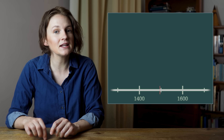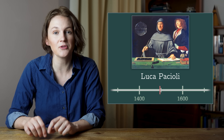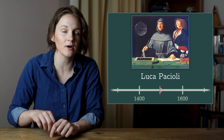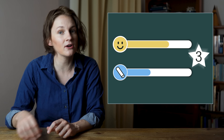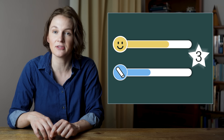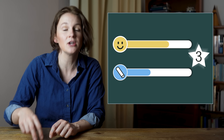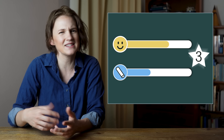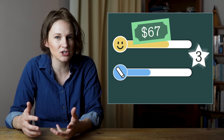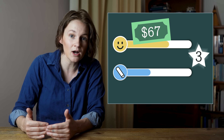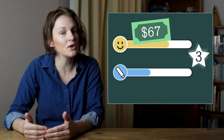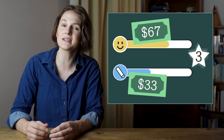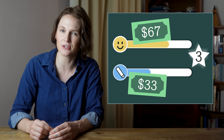In 1494, this mathematician argued that the players should split the prize according to the ratio of current points. So in our example, we played three rounds — you won two, so you get two-thirds of the prize, that's about $67. And I won one, so I get one-third of the prize, about $33. This seems like a better solution.